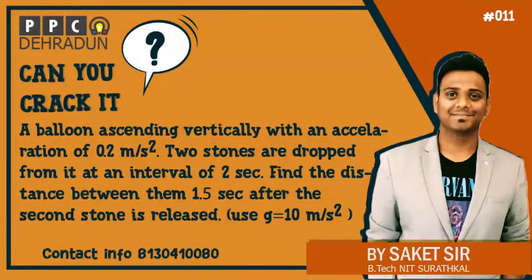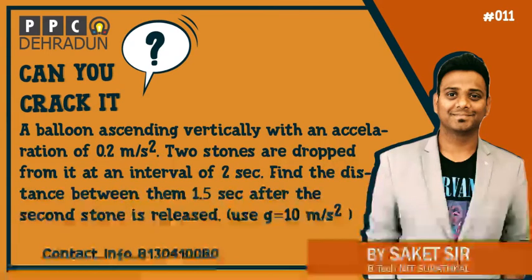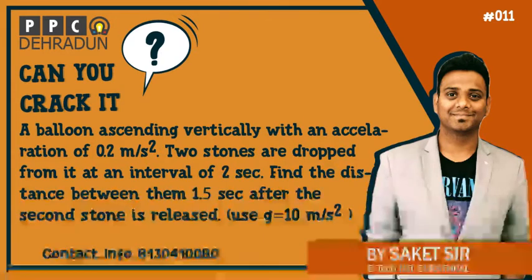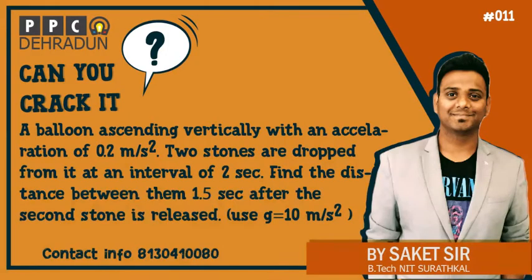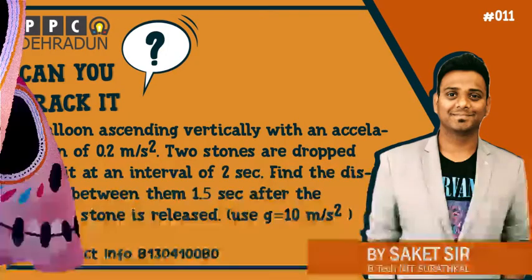A balloon is ascending vertically with an acceleration of 0.2 meter per second square. Two stones are dropped from it at an interval of 2 seconds. Find the distance between them 1.5 seconds after the second stone is released, and we have to take g equal to 10 meter per second square.